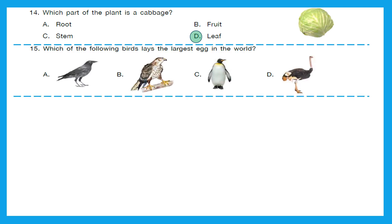Question 15: Which of the following birds lays the largest egg in the world? It is the ostrich. The ostrich lays the largest egg in the world. Option D is the right answer.